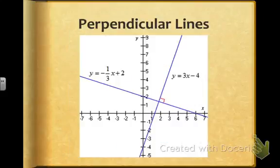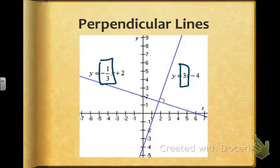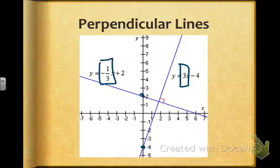Perpendicular lines, on the other hand, have negative reciprocal slopes. It still doesn't matter where they cross the y-axis, but because they have negative reciprocal slopes, they actually intersect to form right angles. So just like parallel lines we say visually will never intersect, perpendicular lines always will form right angles where they intersect.